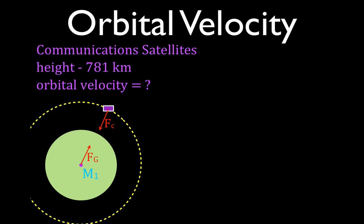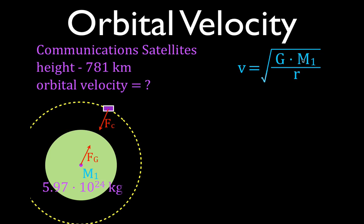Now let's do an example. We have a communications satellite orbiting at an altitude above the Earth of 781 kilometers. We want to know the orbital velocity. The radius R is the distance from the object to the center of mass of the Earth. We're told the satellite is 781 kilometers above the surface, but we also need to add the radius of the Earth, which is 6,371 kilometers, to get the total distance from Earth's center to the object.